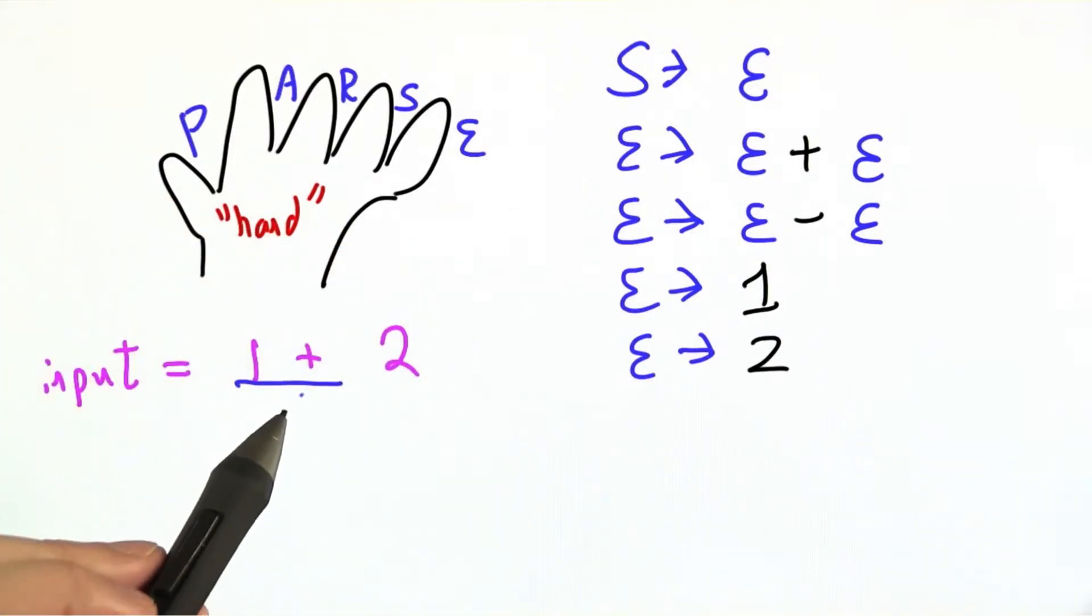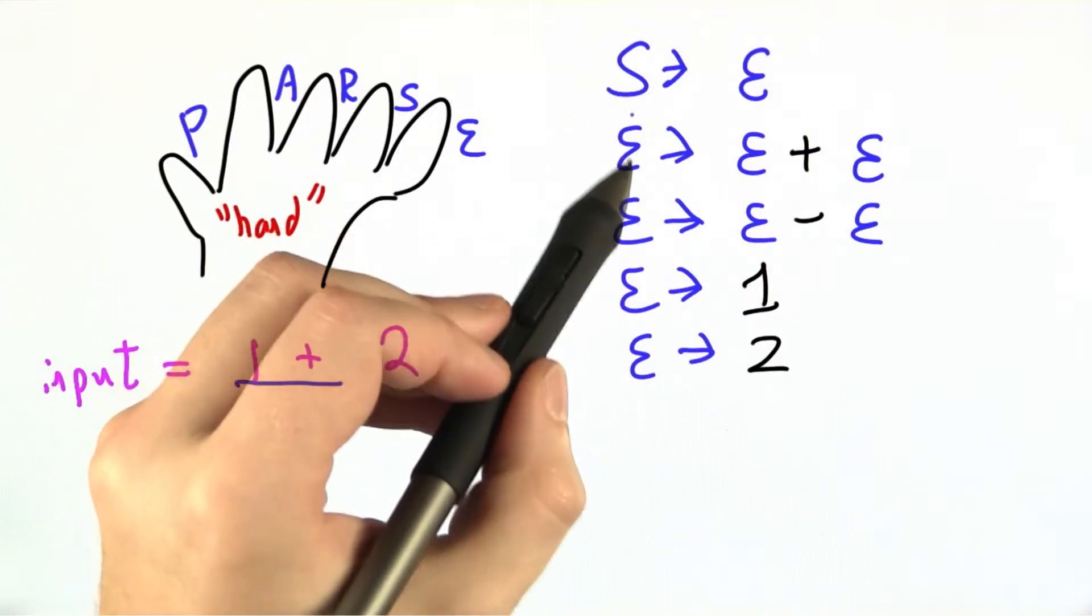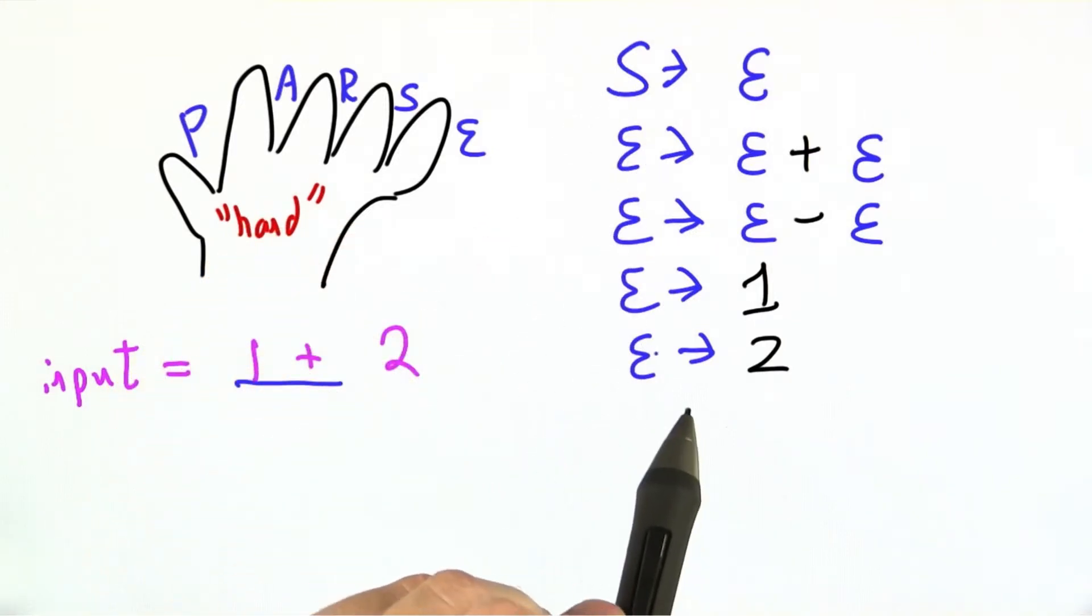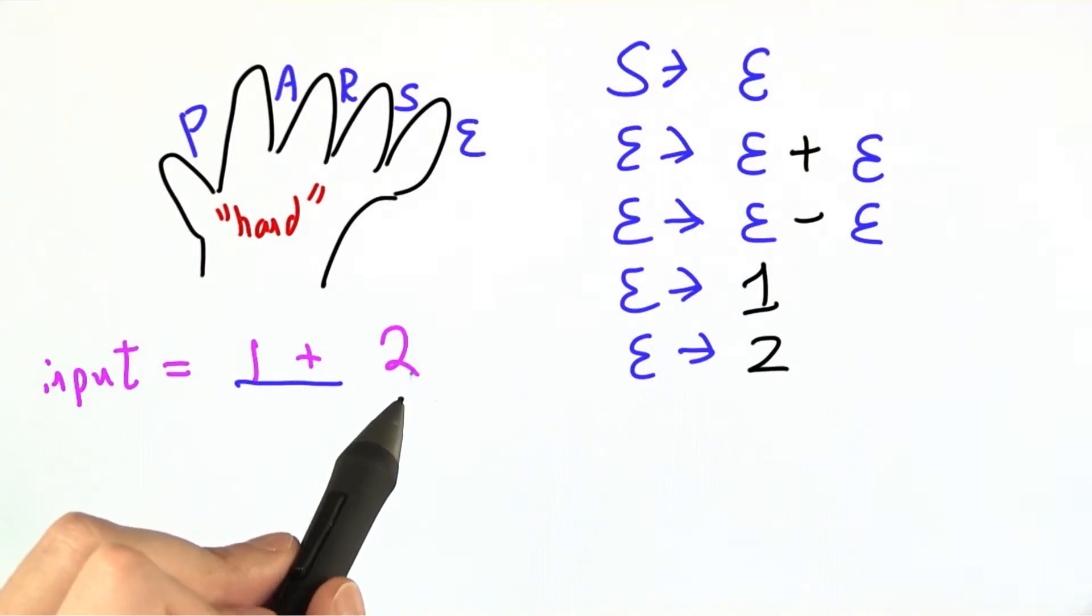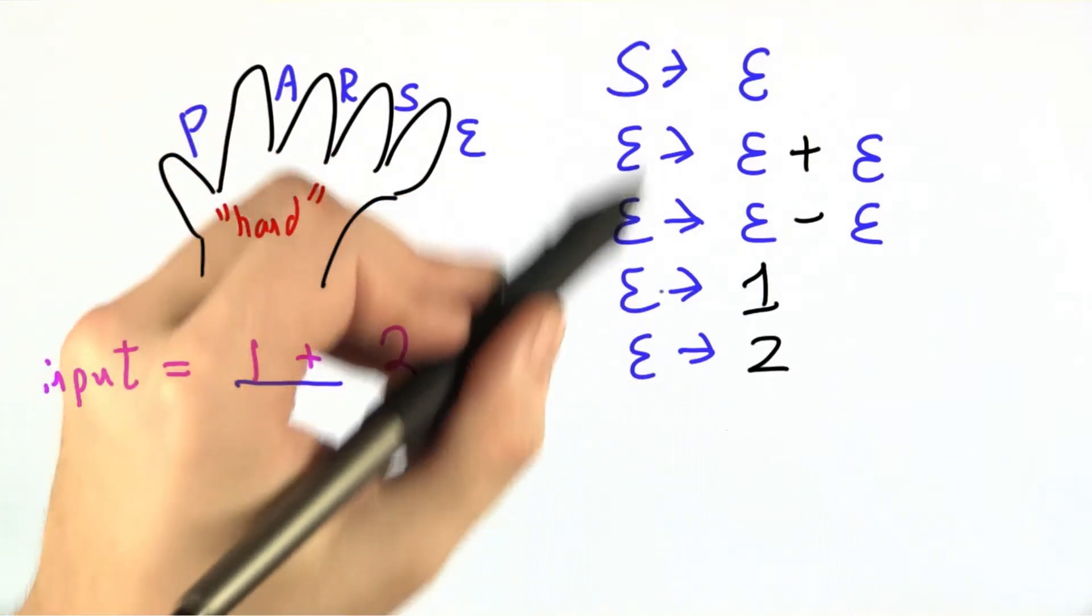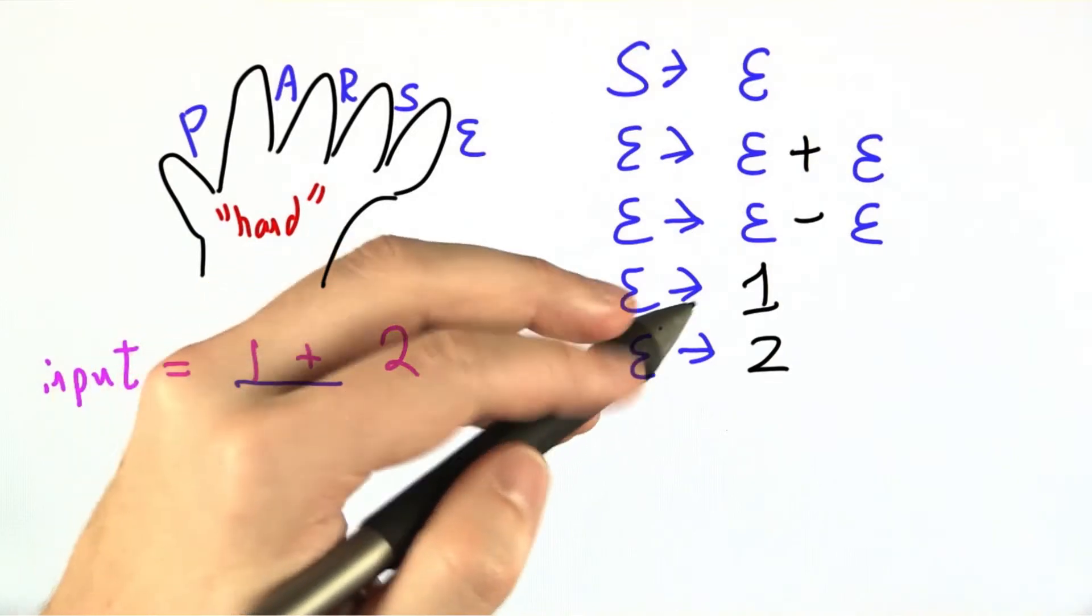Well, we don't have states that look like circles, but we do have these rules. In fact, we've got five of them written over here. And if we've already seen the one and the plus, and we're about to see the two, I claim that there are one or two of these rules that match more closely than others.